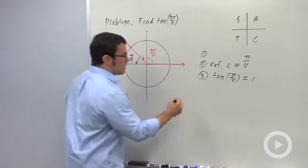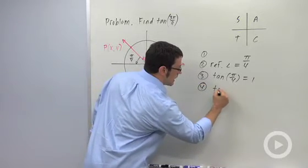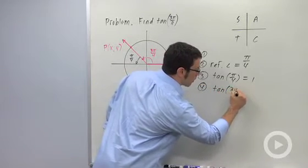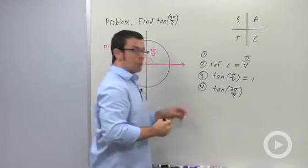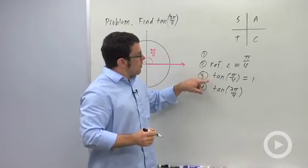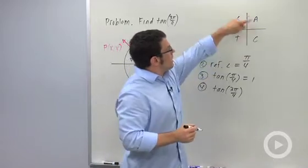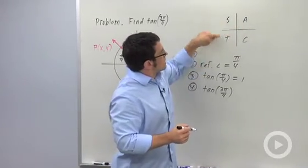Once you've got that, the tangent of 3π over 4 is either plus or minus this value. It's plus or minus depending on which quadrant you're in. You have to remember the mnemonic: all students take calculus.